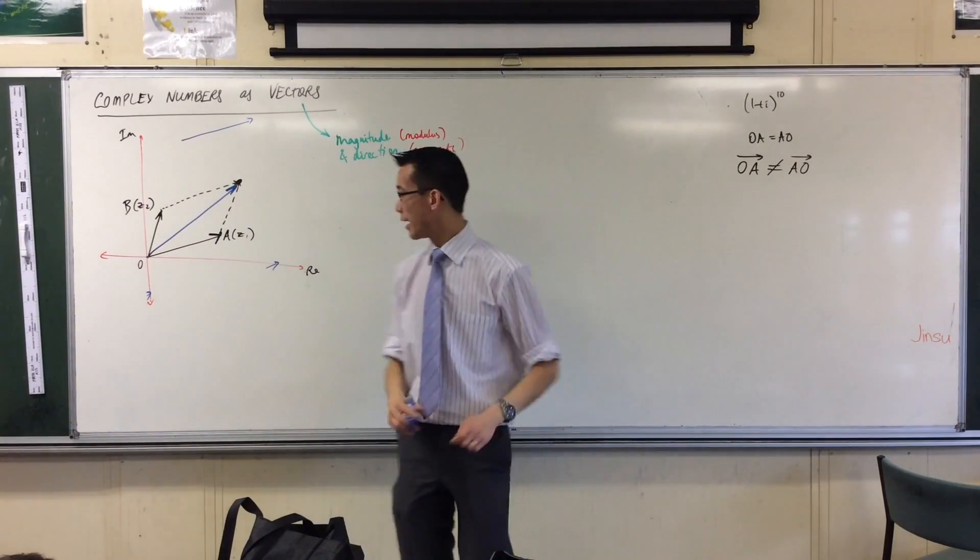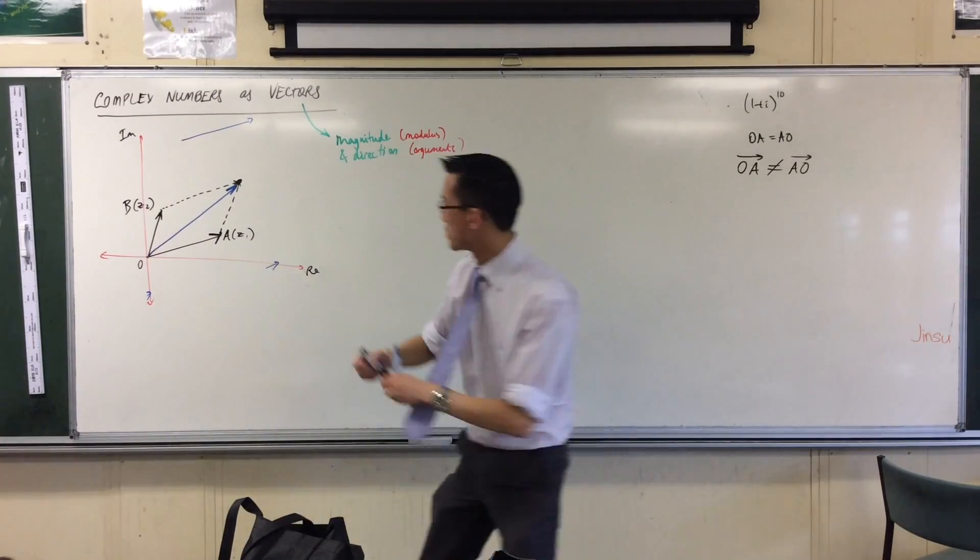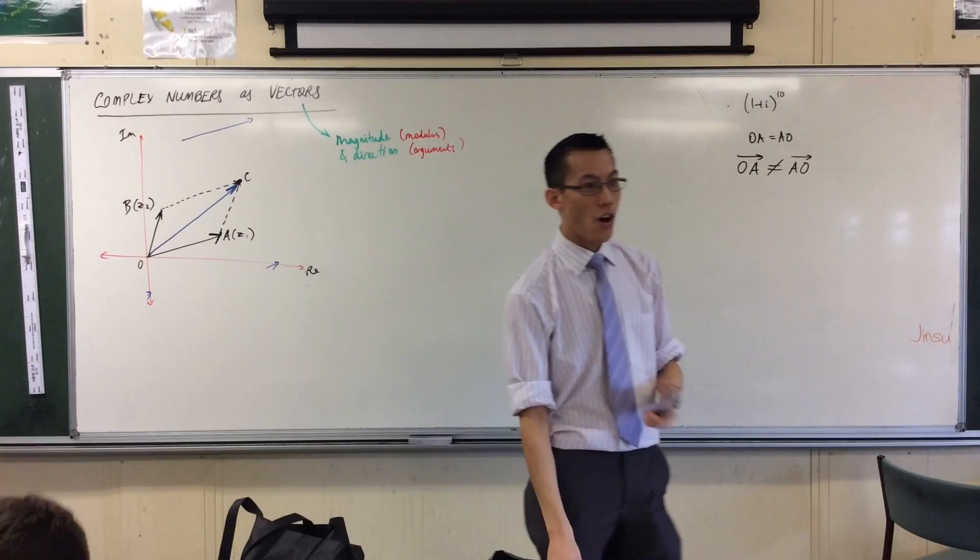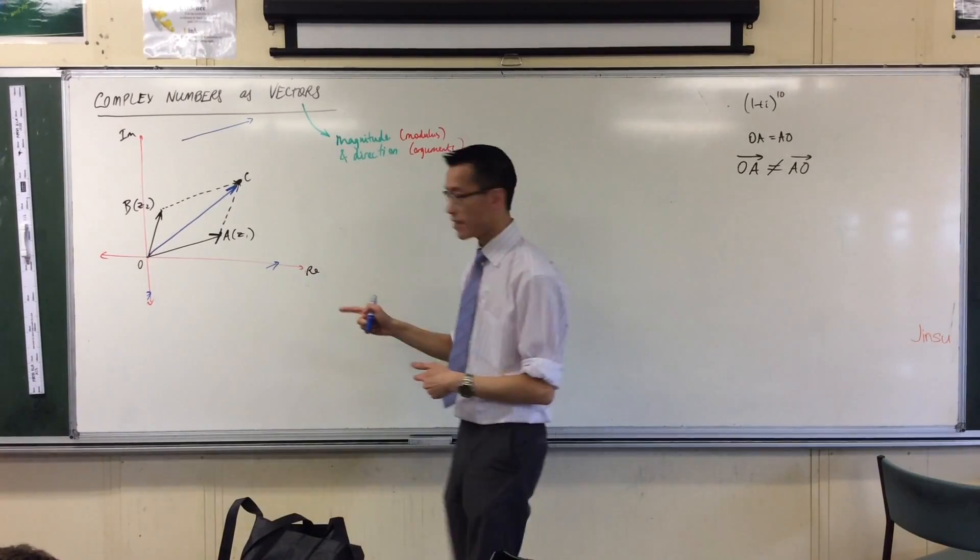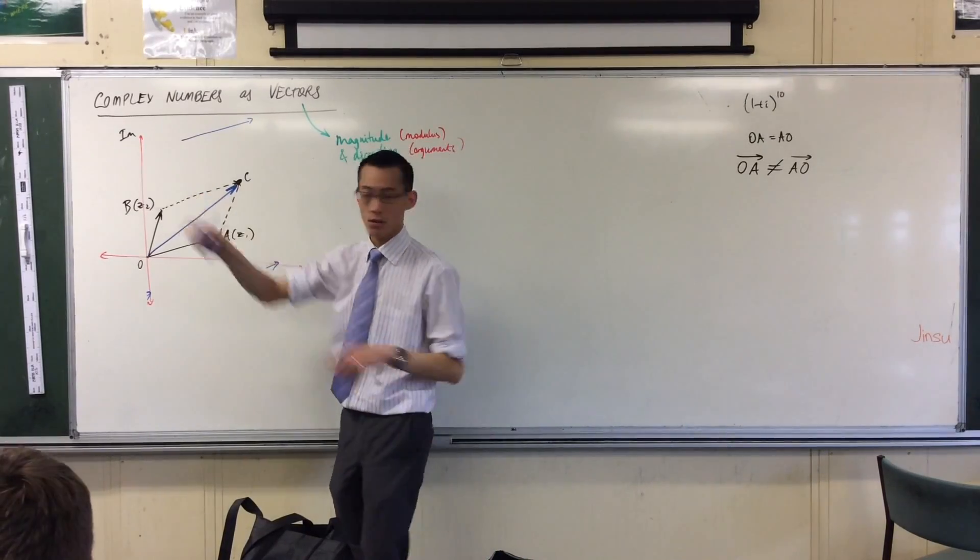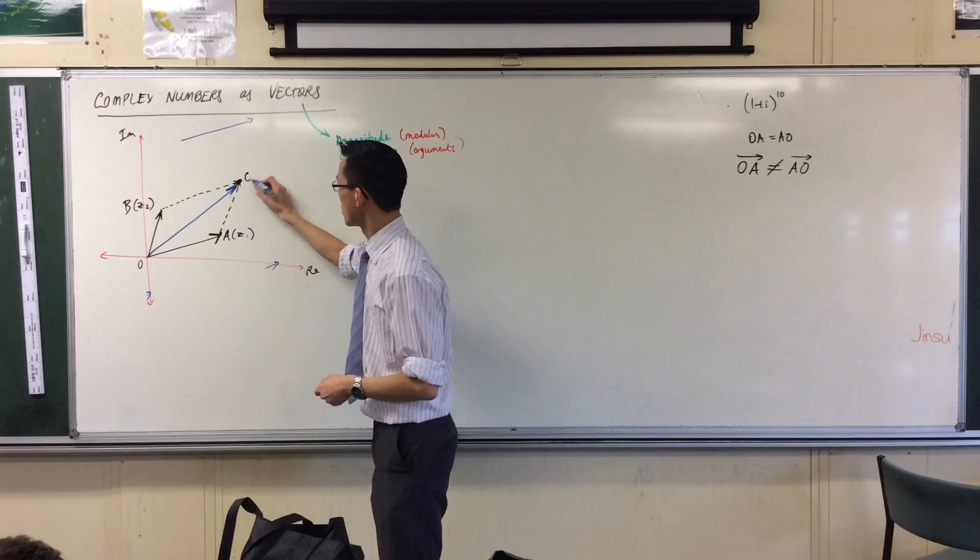Okay, so what I've got in blue there, if we call this point C, the vector OC, that represents the vector Z1 plus Z2.